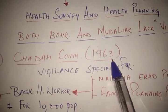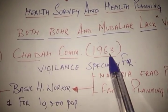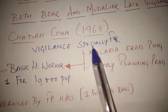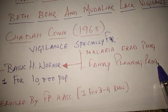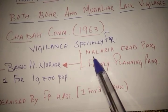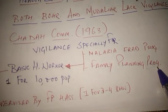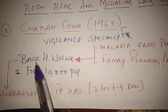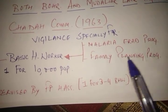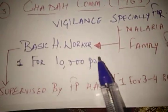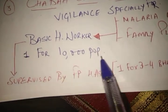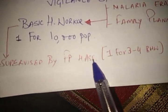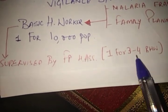The Chadha Committee came in 1963 to provide vigilance to look after the services of Bhore and Mudaliar committees. This vigilance had a special focus on the Malaria Eradication Program and the Family Planning Program. In the Chadha Committee, the basic health worker looked after these activities. There should be one basic health worker for 10,000 population.